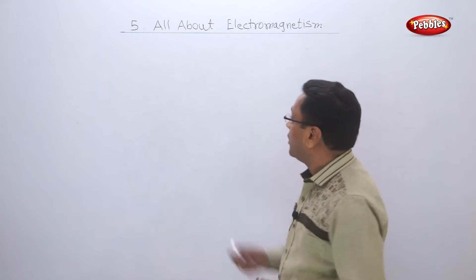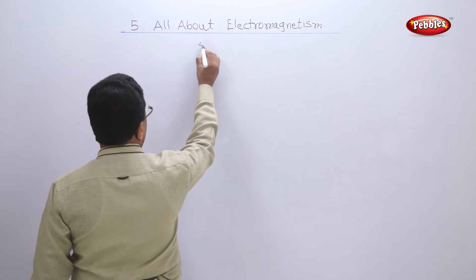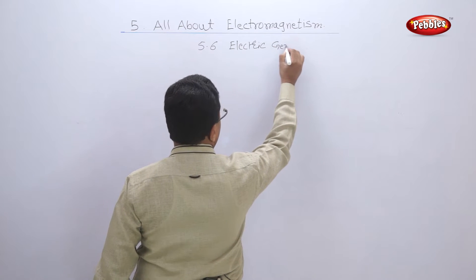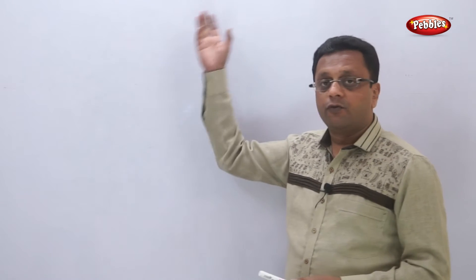Let us learn about the electric generator. A generator generates electricity. It works on electromagnetic induction. Whenever the coil is rotated in a strong magnetic field, the magnetic field lines are cut and this induces an electric current in the coil, and that current will flow through the circuit attached to the coil.